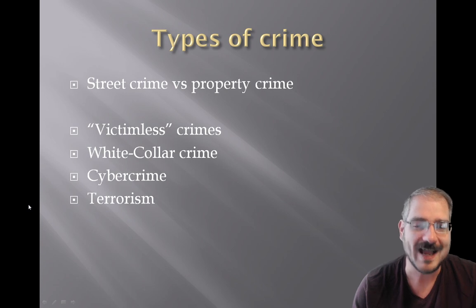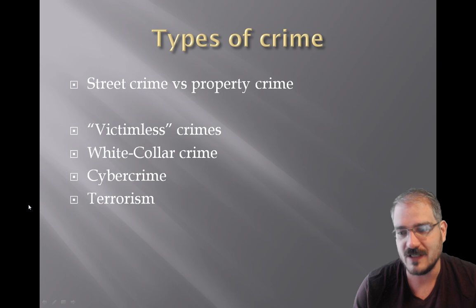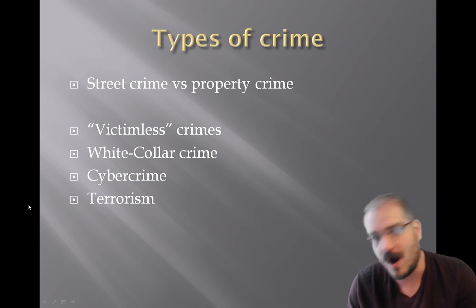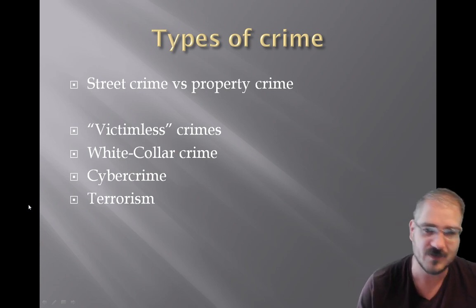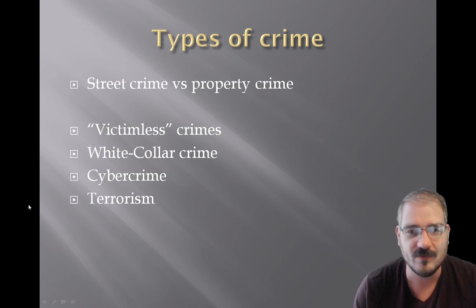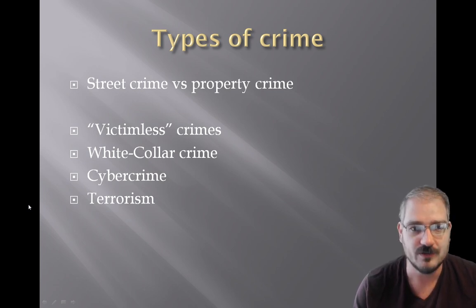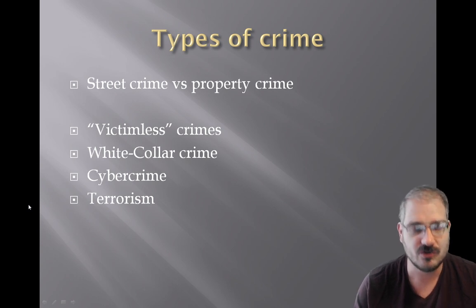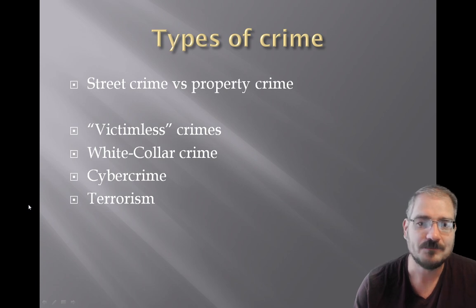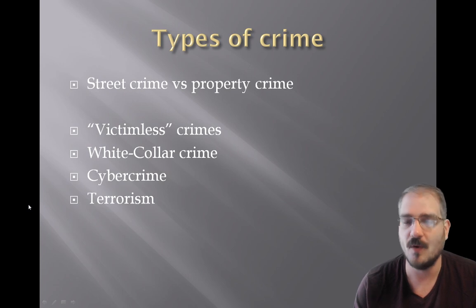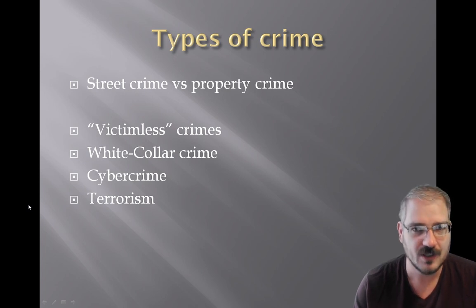There are lots of different ways to talk about types of crime. The most famous — the one you see on TV — is street crime versus property crime, sometimes called violent crime versus property crime. Street or violent crime includes murders, robberies, rapes, and assaults — things where somebody gets physically hurt. Property crime is crimes against objects: burglary of a business, embezzlement, vandalism — where nobody is actually physically hurt.